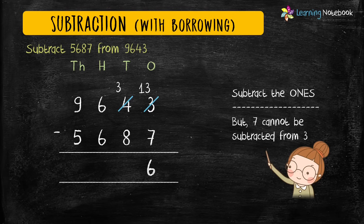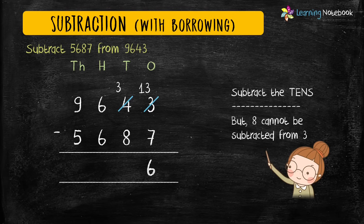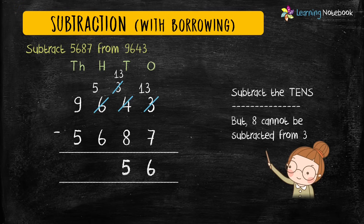Now let's subtract the digits at tens place. But again, 8 is bigger than 3, so it cannot be subtracted from 3. So we will borrow from hundreds place, so 6 becomes 5 and 3 becomes 13. Now let's subtract these two numbers at tens place: 13 minus 8 equals 5.